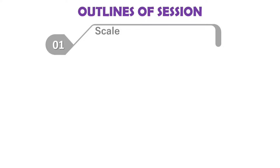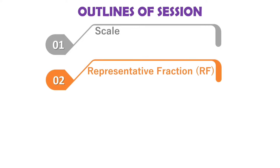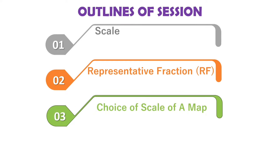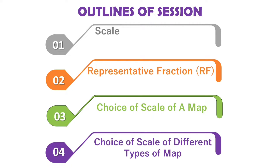Outline of the session. In this session, we will learn: first, scale; second, representative fraction, that is called RF; third, choice of scale of a map; and fourth, choice of scale of different types of map. So let us start with the scale.